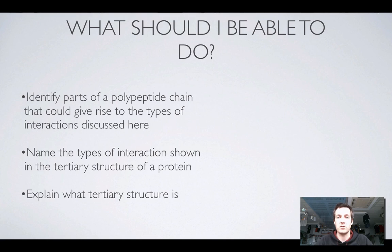You should be able to name the types of interactions—disulfide bridges, hydrogen bonds, and so on—and you should be able to explain what the tertiary structure is. That's the 3D structure of the molecule that comes about as a result of these interactions between side chains, not between amide groups.